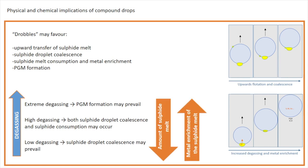We can therefore say that the amount of sulfide melt decreases with increasing degassing, whereas its metal enrichment increases. Of course, when the consumption of the sulfide melt is complete, no more metal enrichment is possible in the sulfide melt, but platinum group minerals may crystallize.